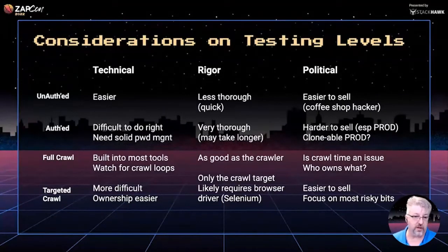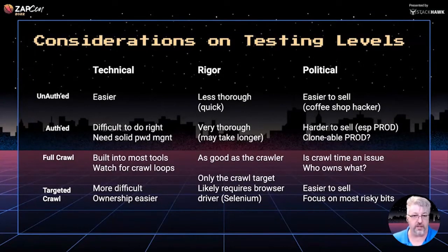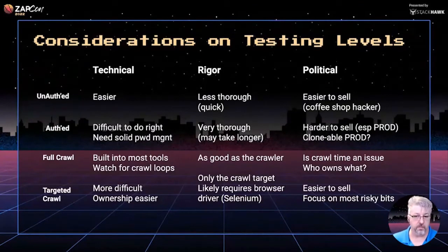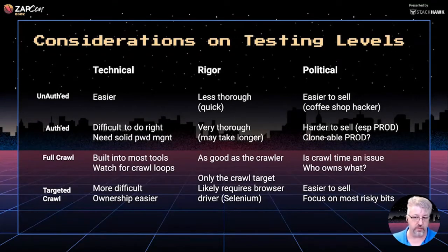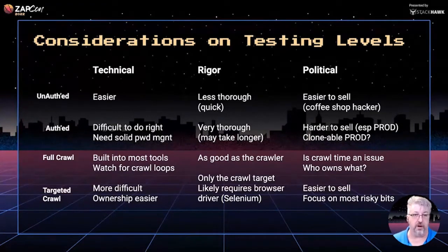A targeted crawl is a little more difficult to set up, but ownership is usually easier because you can focus the crawl to things owned by particular teams. You'll need some kind of browser automation like Selenium to do that targeted crawl instead of letting the default crawler run. It's also easier to sell because you can tell people explicitly where the scan is going and what forms it'll fill out. You can focus on the most risky bits, and avoid burning cycles on portions of the app that aren't important to the business.